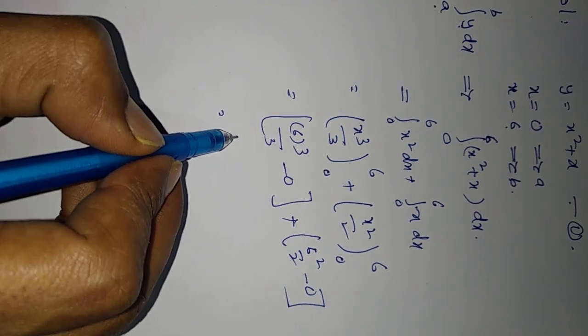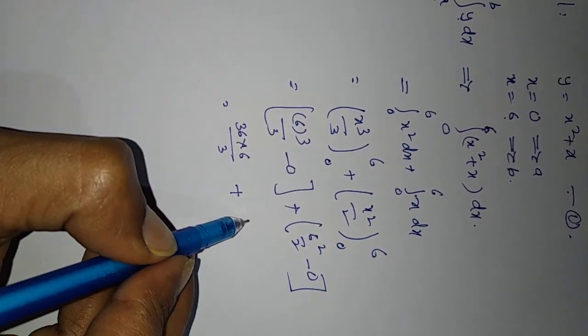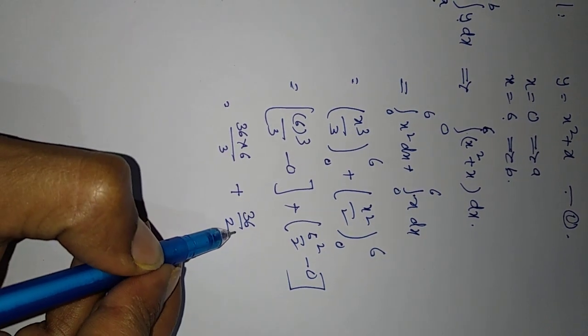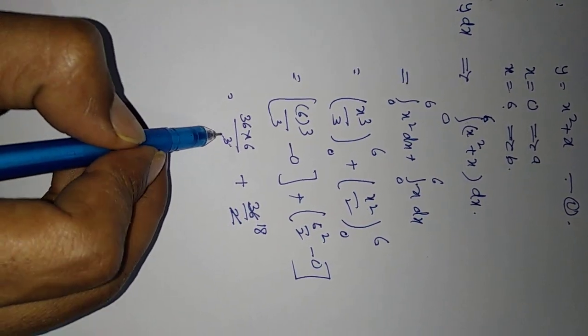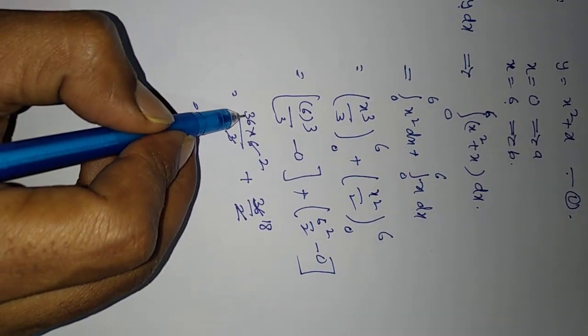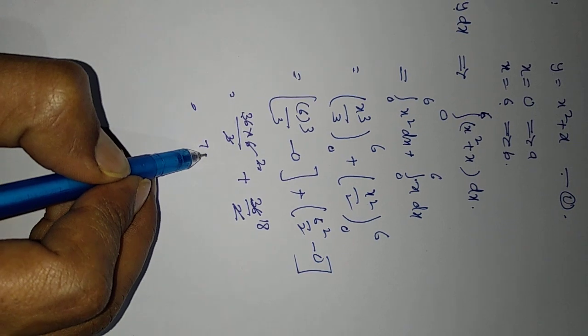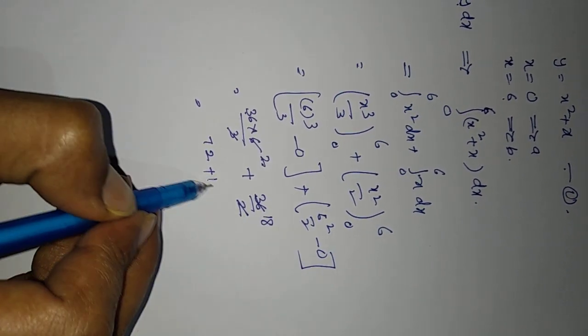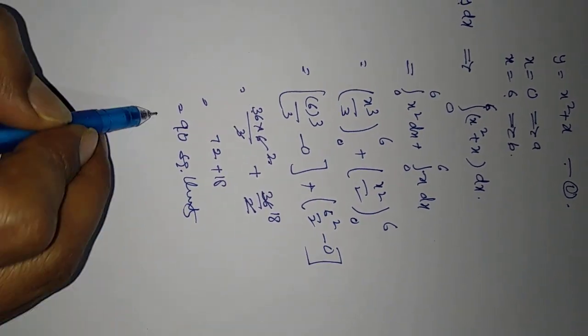That equals 216 by 3 plus 36 by 2, which is 72 plus 18. That equals 90 square units.